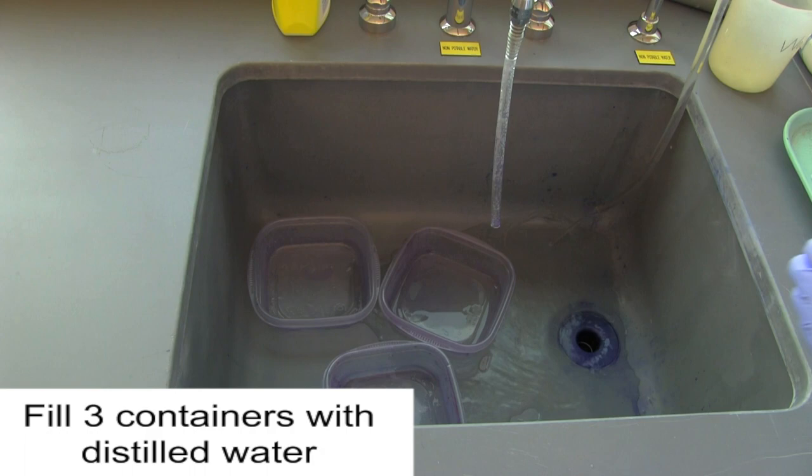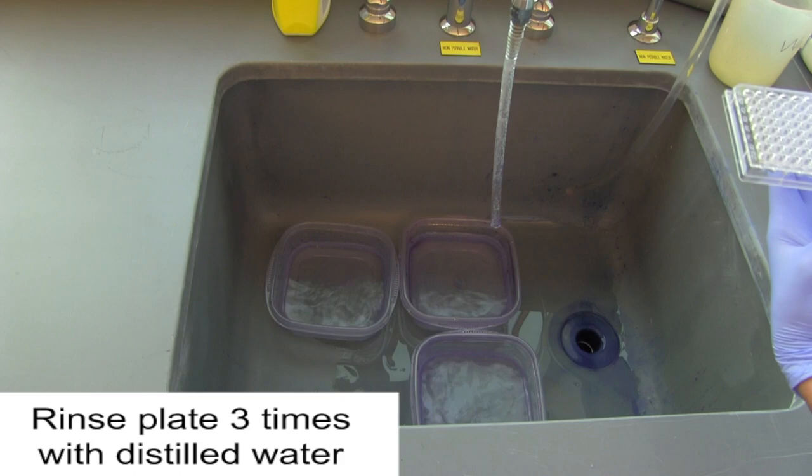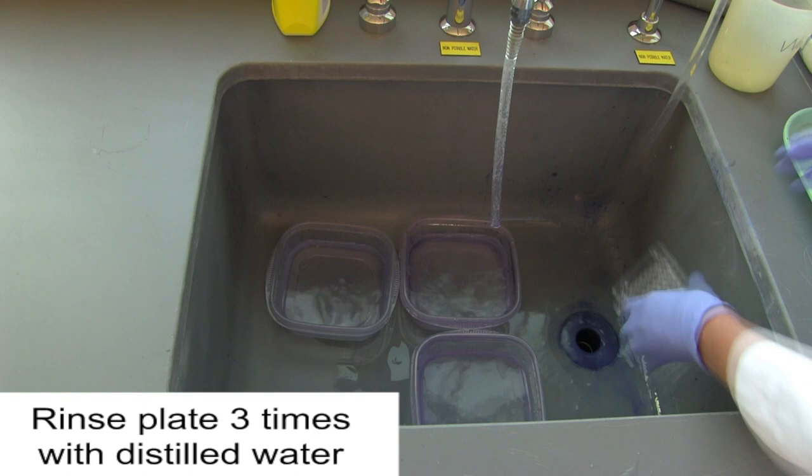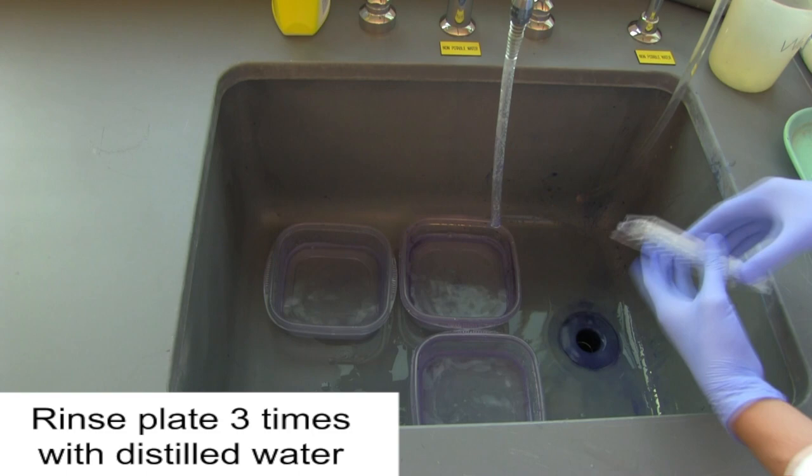Next, fill three containers with distilled water. These will be used to wash out any excess planktonic cells. Next, plunge the plate into the first container and shake the cells out into the drain. Continue with the second and third containers.